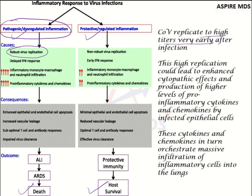This high replication leads to enhanced cytopathic effect on the lung cells and higher production of pro-inflammatory cytokines. It is already causing damage, and it also produces more cytokines from the infected epithelial cells. These cytokines and chemokines in turn cause more infiltration of the lung cells, leading to further damage. So in pathogenic inflammation there is robust viral replication, whereas protective inflammation is associated with non-robust viral replication.